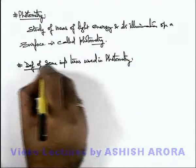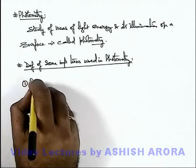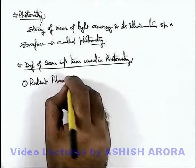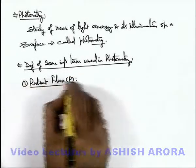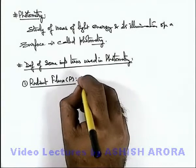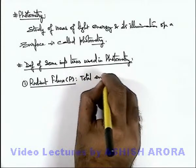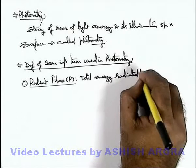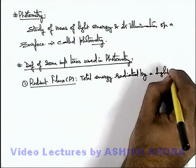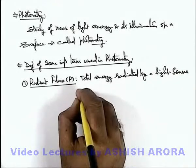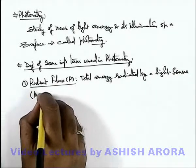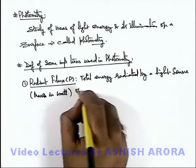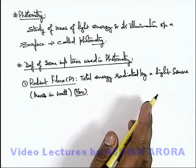Here the very first term we're going to study is radiant flux. This is denoted by the symbol P. This radiant flux is simply defined as total energy radiated by a light source, and it is always measured in units of watt, that is joule per second.